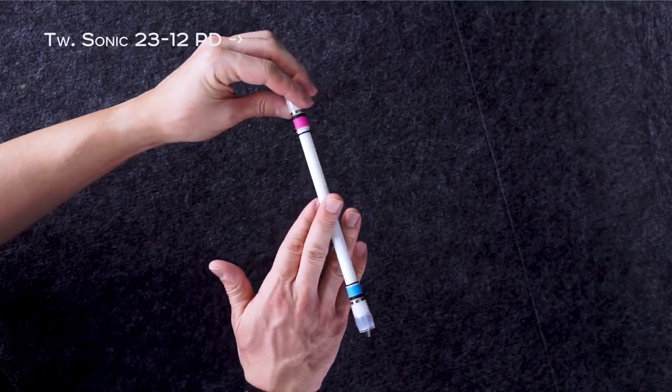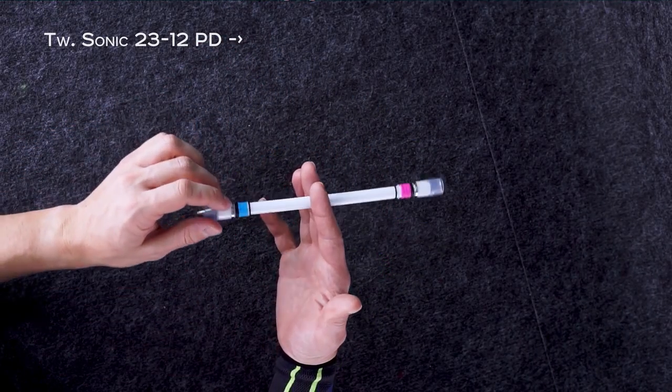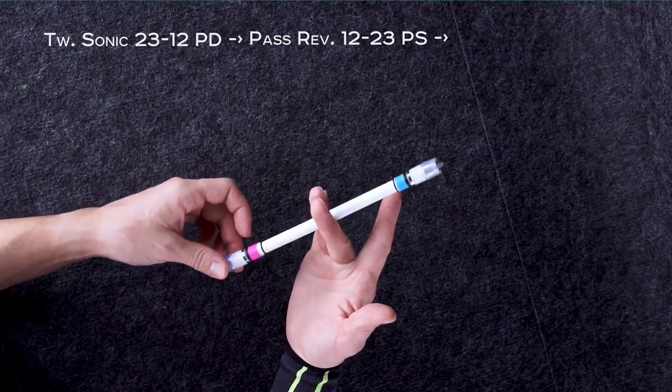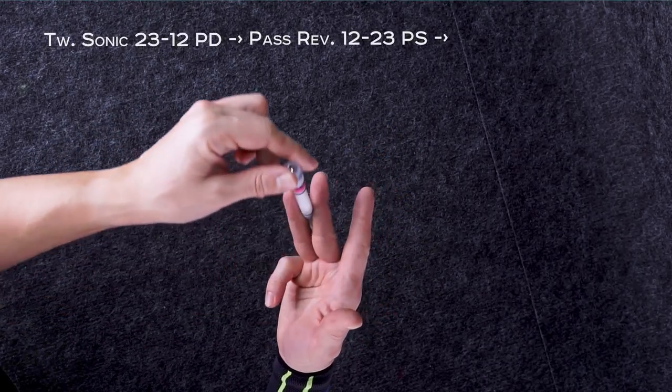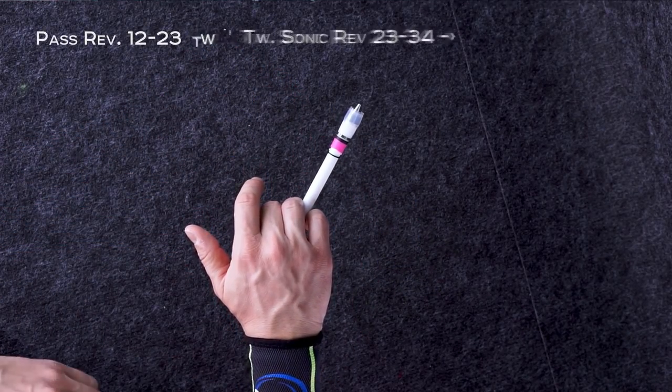Okay, let's repeat this part. Twisted sonic 2312 palm down, Pass reverse 1223 palm side, Twisted sonic reverse 2334 with finishing in palm down position again.